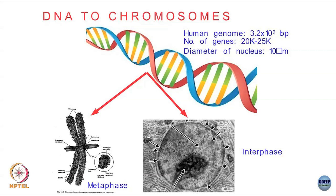This genome is a polymer — it is this double helix polymer, the DNA — and you need to package it inside the nucleus, which is of the order of 10 microns. So you need to take these 10^9 base pairs and put them inside this 10-micron-sized nucleus.